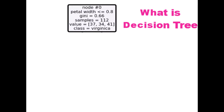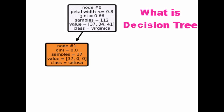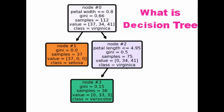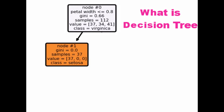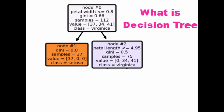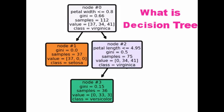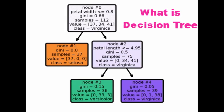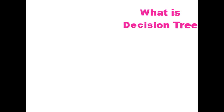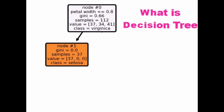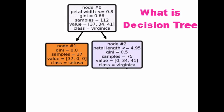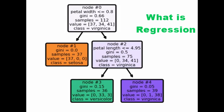Decision tree algorithm belongs to the family of supervised machine learning algorithms. It can be used to build classification as well as regression models. In this video, we will learn about the regression part of the decision tree algorithm.